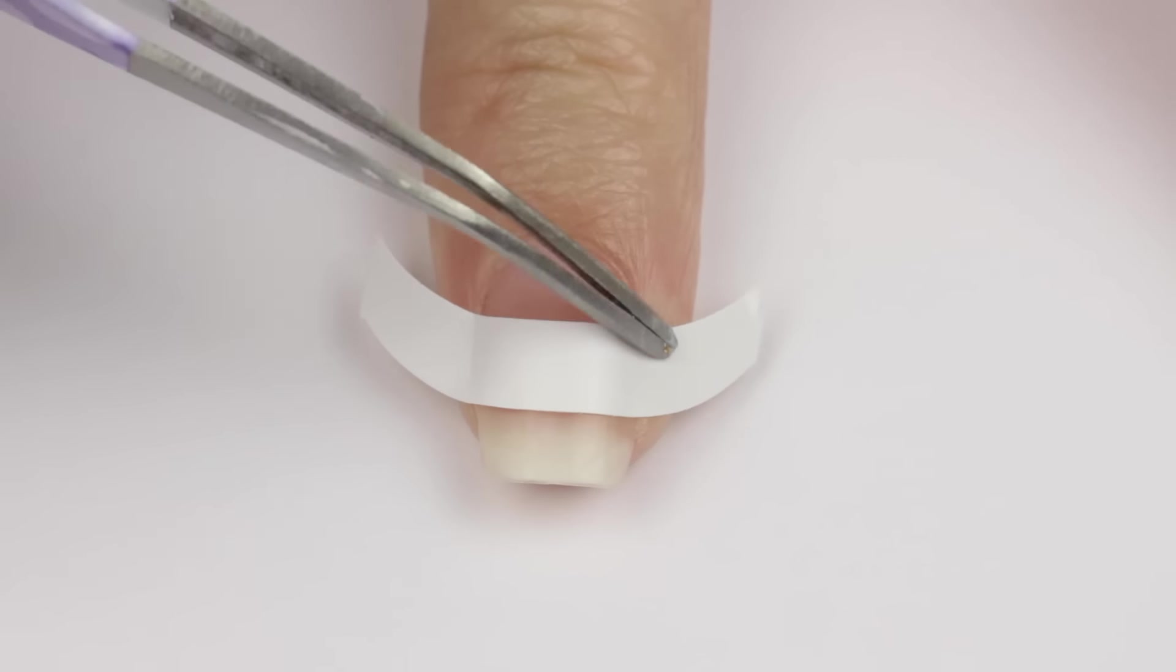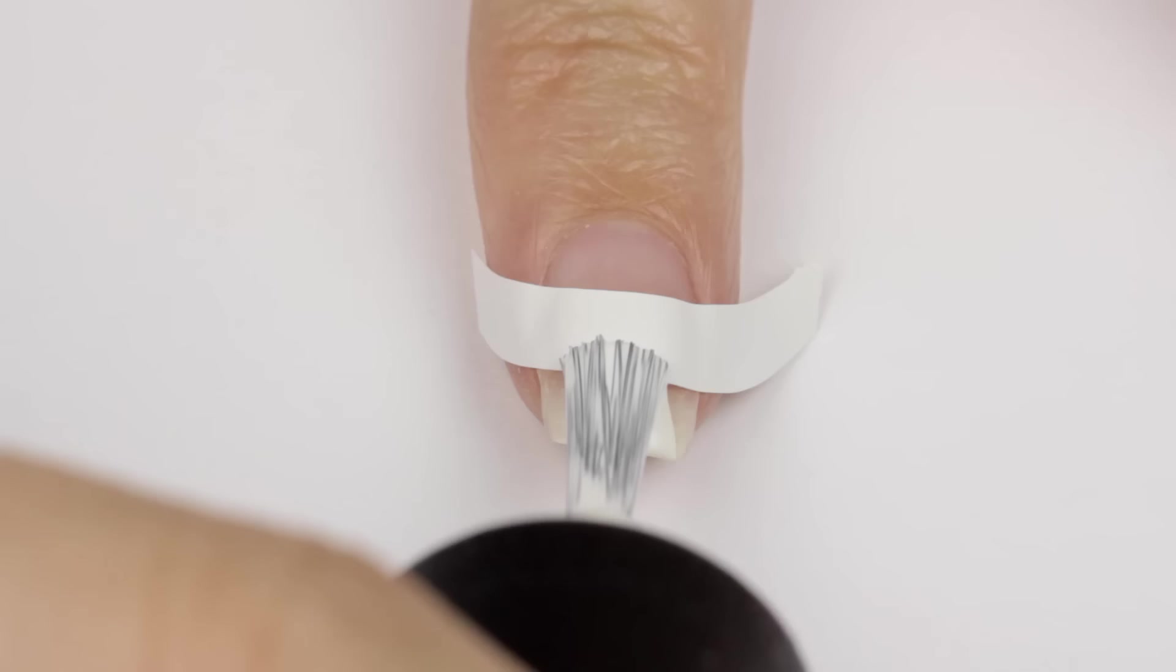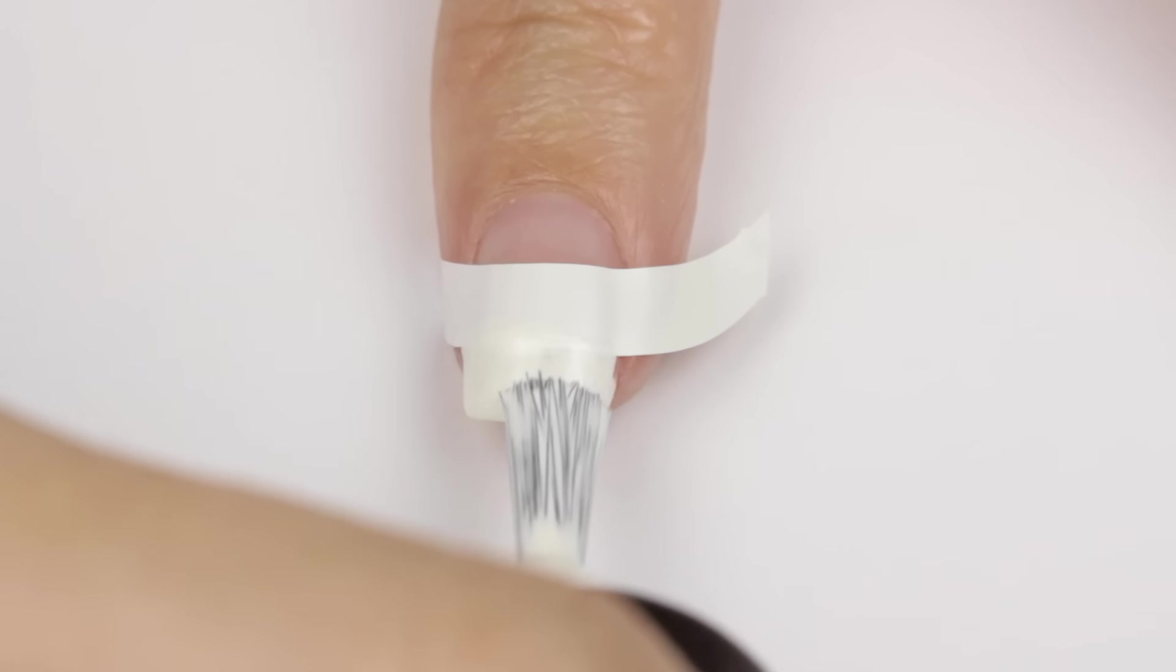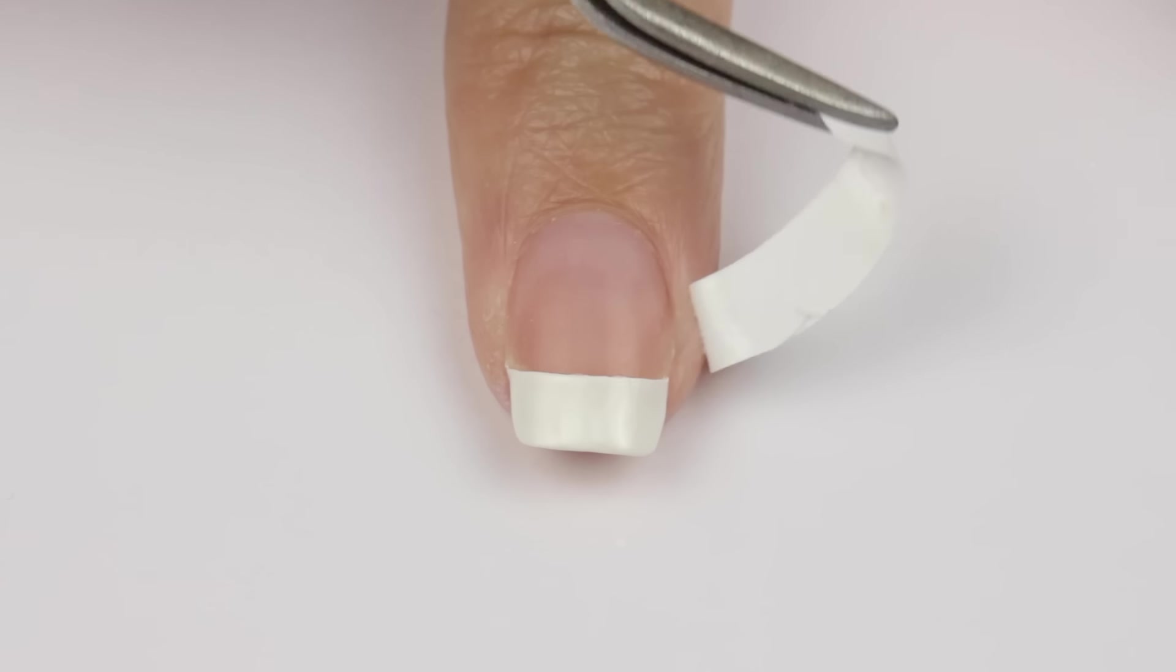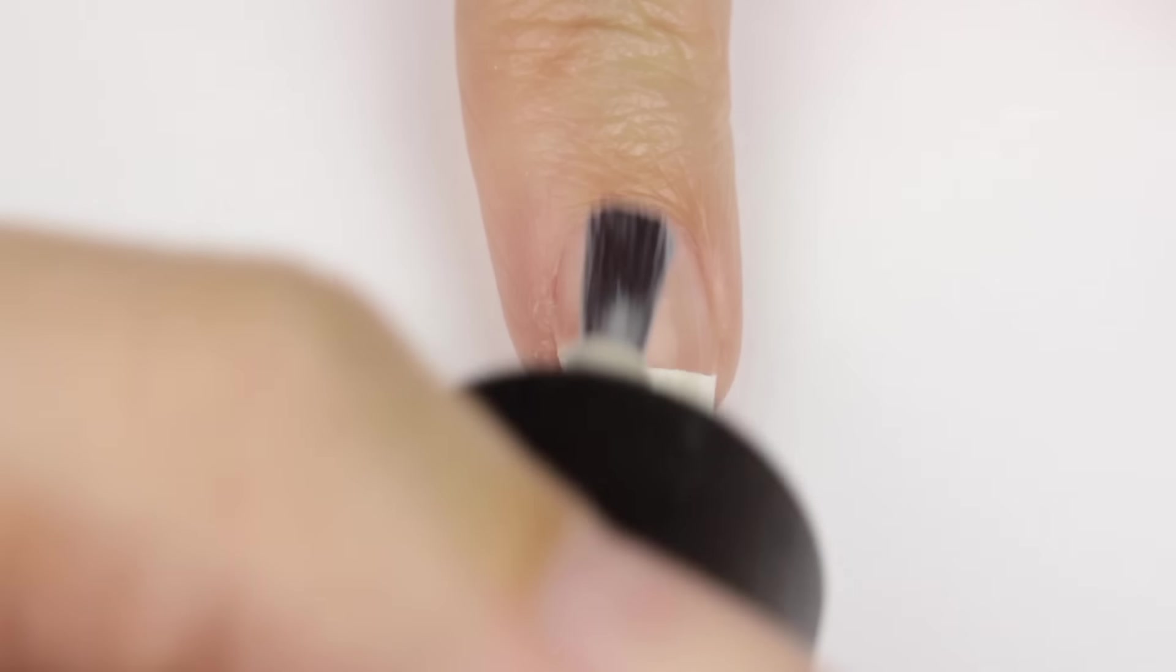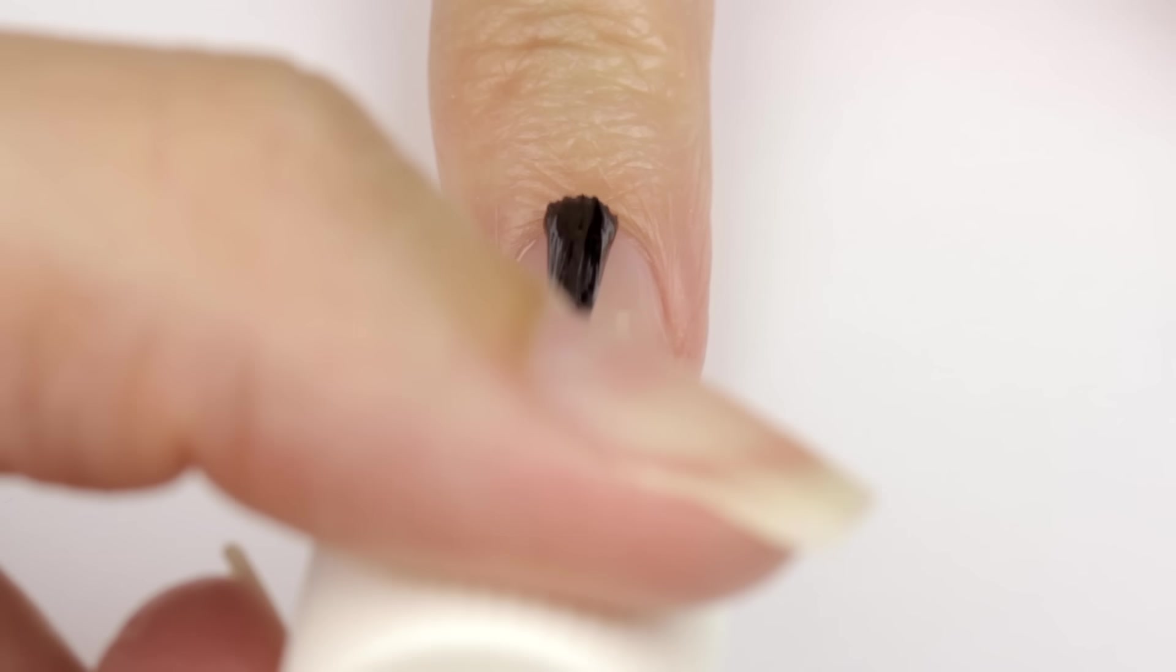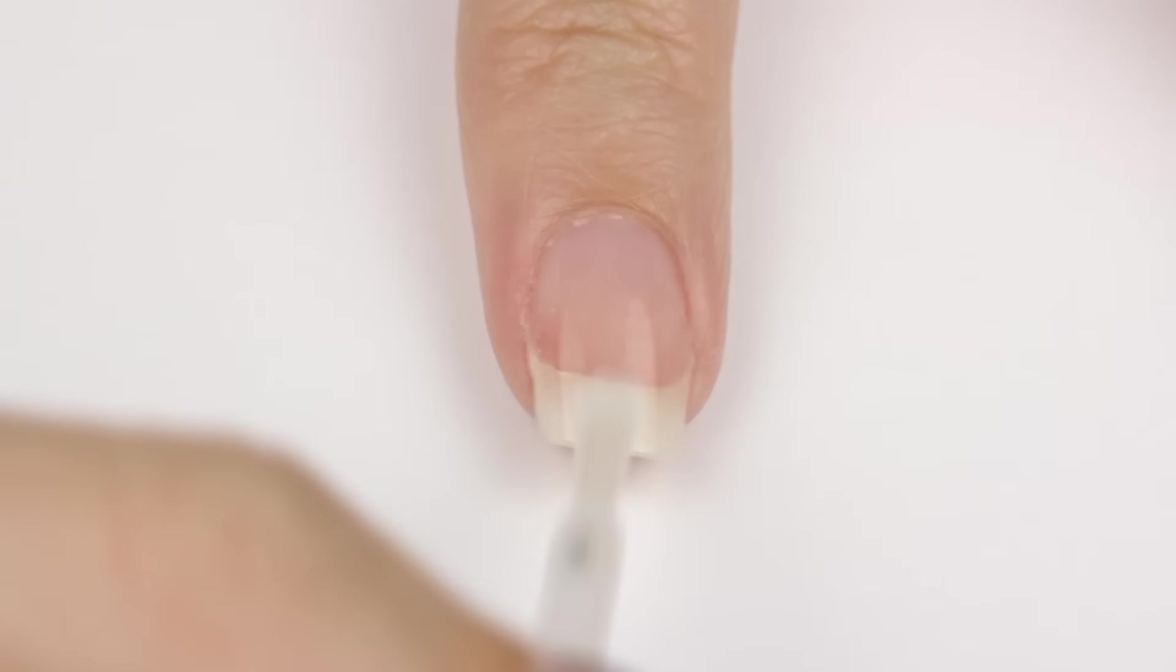Then paint some white nail polish above the sticker and before it has a chance to dry peel the sticker off for a perfect clean line. Then you can apply a sheer nude polish over it and top it off with a fast drying top coat. All done.